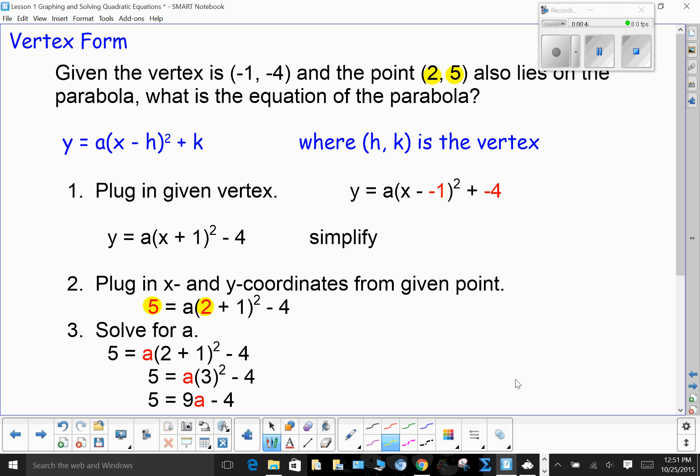First, let's do the vertex form. If you're given that the vertex is (-1, -4), and the point (2, 5) also lies on the parabola, what is the equation of the parabola?